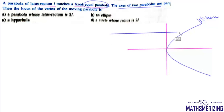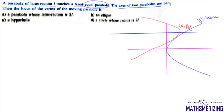We can take this moving parabola with vertex at (α, β). The equation of this moving parabola will be (y − β)² = −4a(x − α), because it will be a parabola opening leftwards.